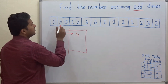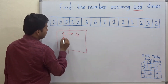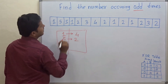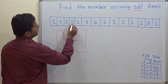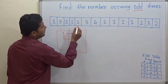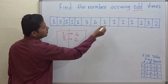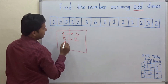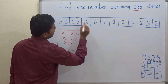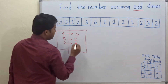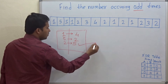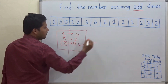Then 5 is occurring 2 times. Then 1 is there again — already noted. Then 2 is occurring 1, 2, 3, 4 and 5 times. So 2 is the number — 2 is the number which occurs an odd number of times in the array.